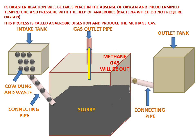After the gas is produced, the waste goes towards the outlet tank where it is collected. This waste is used as a fertilizer for the fields and helps in increasing the fertility of the soil.